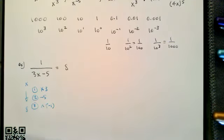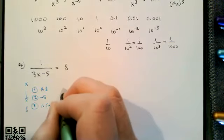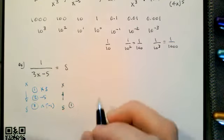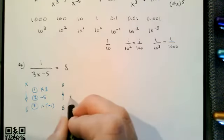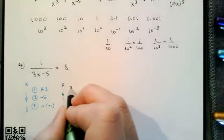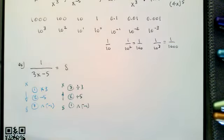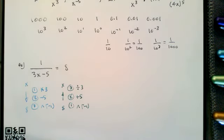To undo those things and turn an 8 back into x: first, raise to the reciprocal of negative 1, which is also negative 1. Second, add 5. Third, divide by 3. Remember, the reciprocal of negative 1 is negative 1 — negative 1 is self-reciprocal.